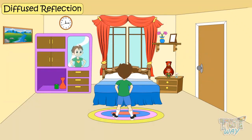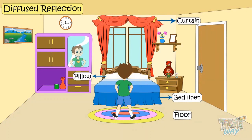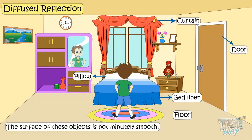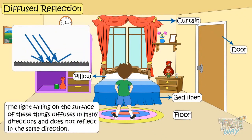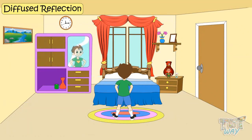But you are not able to see your own image in the curtain, the floor, the bed linen, the pillows, or the doors. Why? Because those surfaces are not minutely smooth — even the fabric has roughness, and even the door has some roughness. This very minute roughness leads to diffuse reflection. That is, the light falling on these things diffuses in many directions and does not reflect in the same direction, and that is why you are not able to see your image in every object in the room.